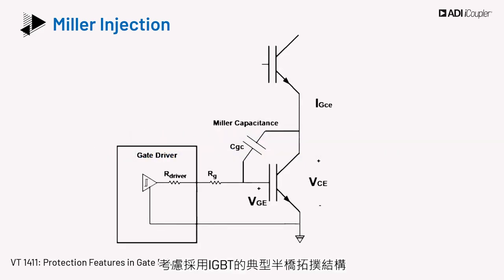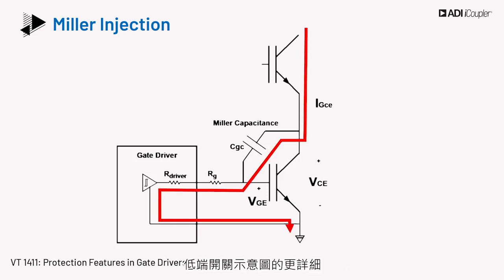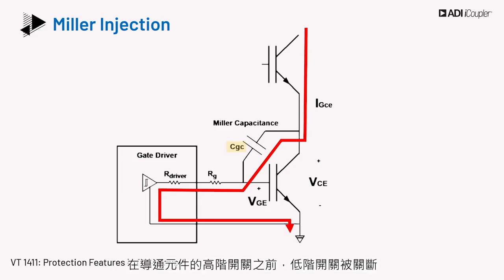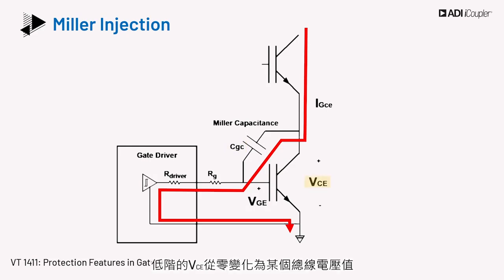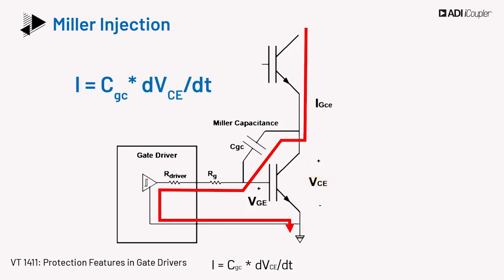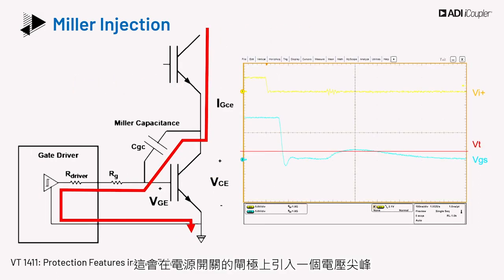Consider the typical half-bridge topology with IGBTs. The low side switch is shown more elaborately, indicating the internal gate-to-collector capacitance CGC, which is the Miller capacitance. The low side switch is turned off before turning on the high side device. During high side turn-on, the VCE of the low side changes from zero to some bus voltage value. The high slew rate on VCE causes current to flow through CGC, given as I = CGC × dVCE/dt. This induces a voltage spike at the gate of the power switch, known as Miller injection.